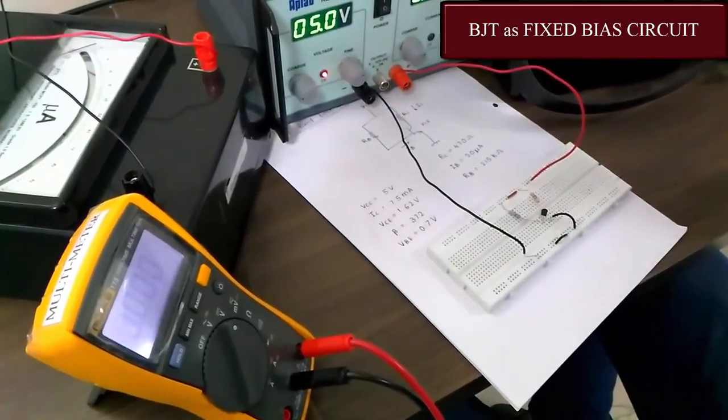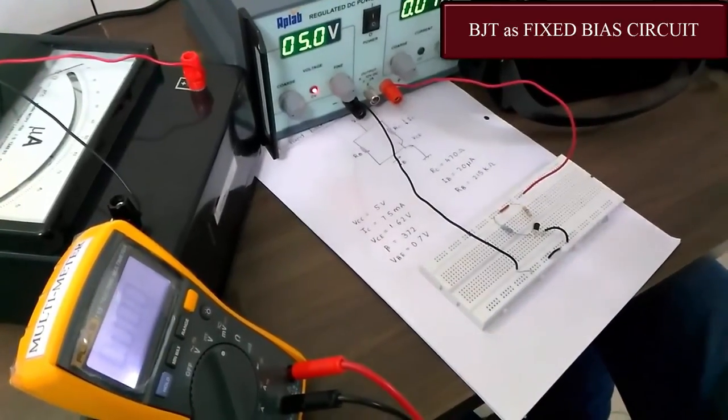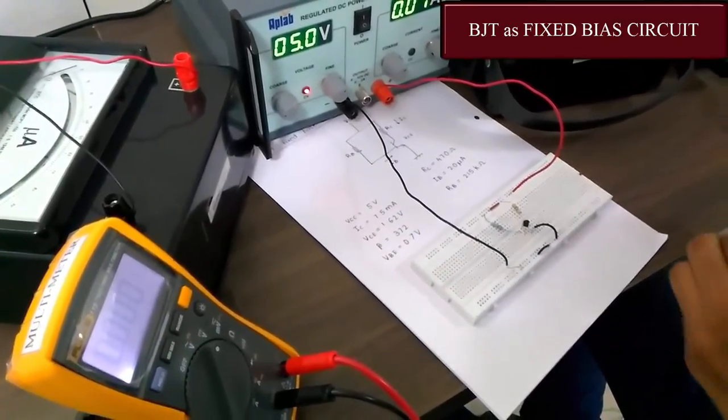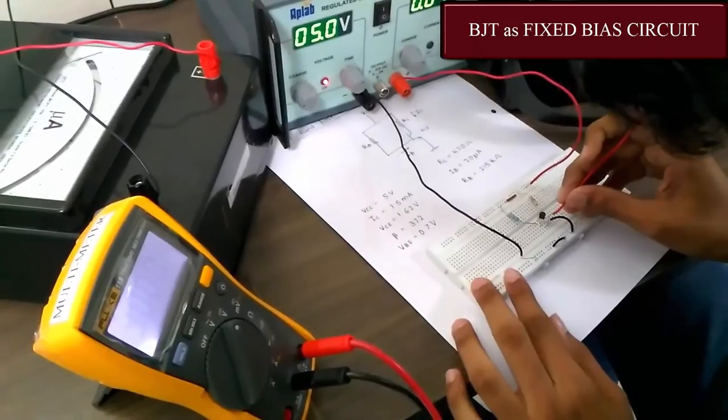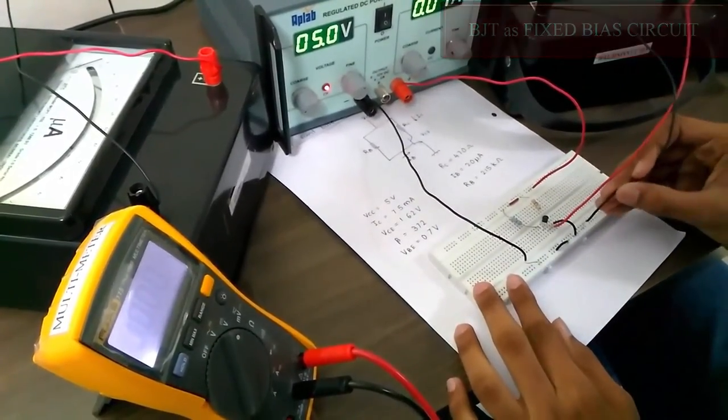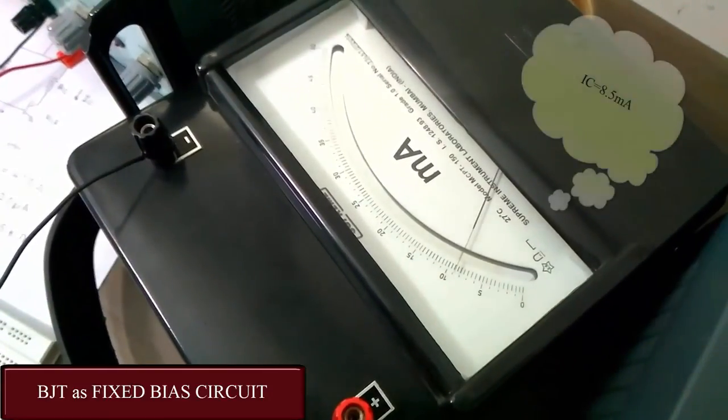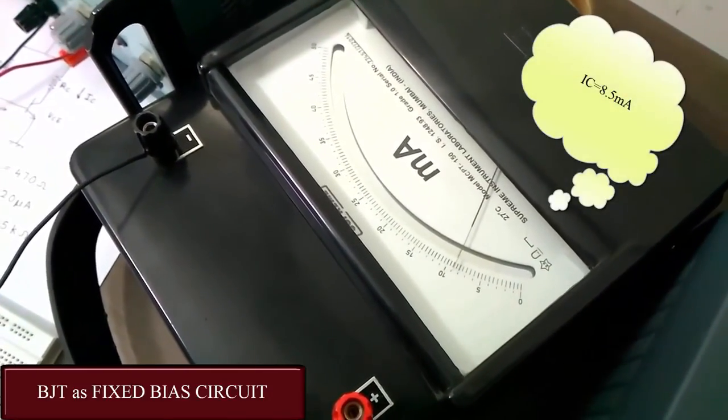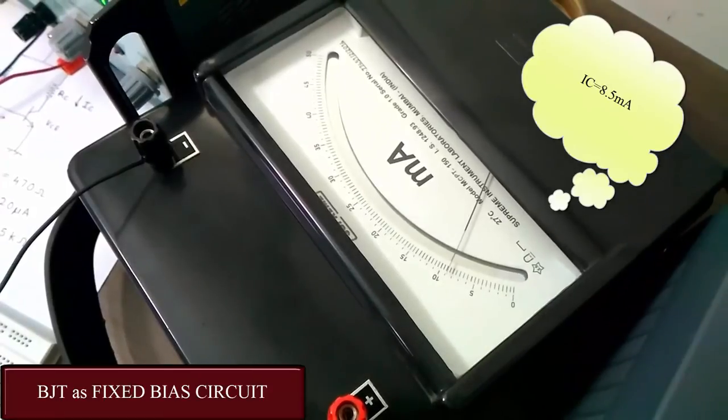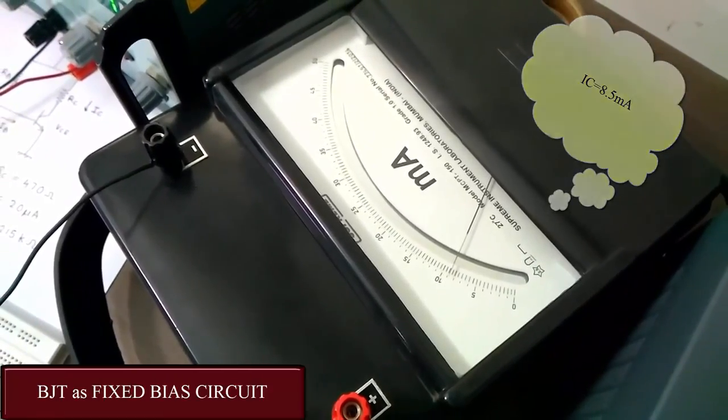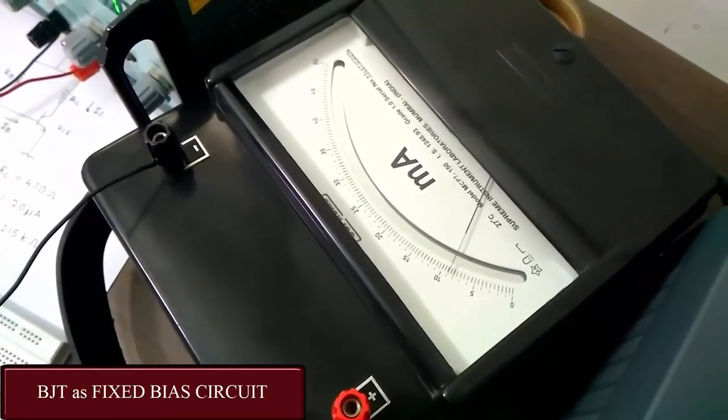Now let us check for IC. For checking IC, we will connect a milliammeter to the collector terminal and the ground to ground. Now let us see the value of IC. Here we can see that the current IC we obtained is 8.5mA. That is close to 7.5mA. So regarding IC also our circuit designing is correct.